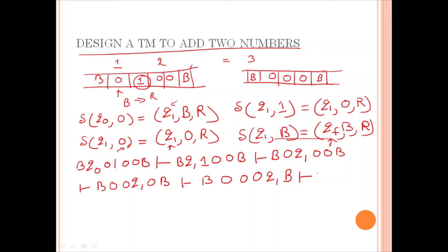So, you are going to have blank 0, 0, 0, qf. Before qf, you are having blank symbol. So, this configuration has been reached that we have talked about. So, in this way, we are going to design the Turing machine to add two numbers. Thank you.